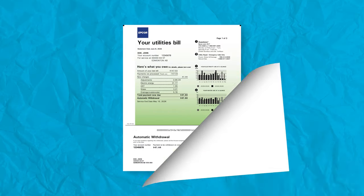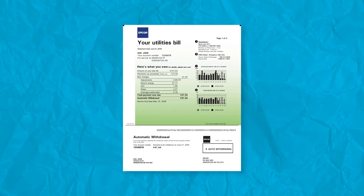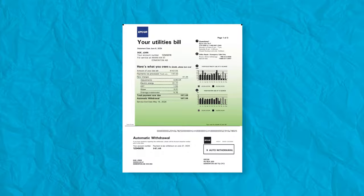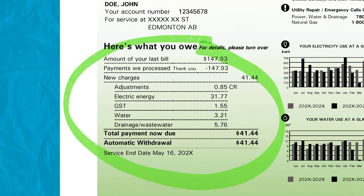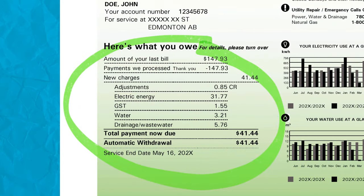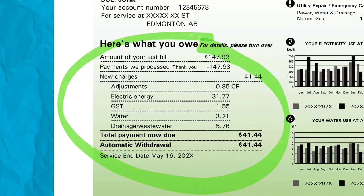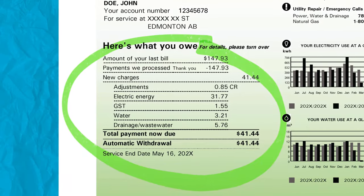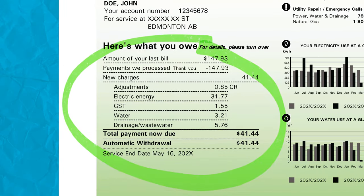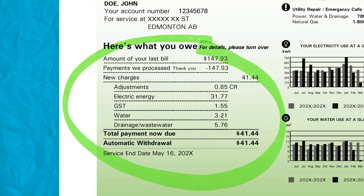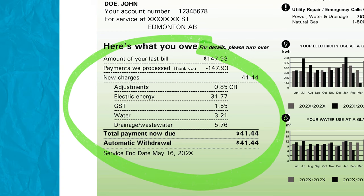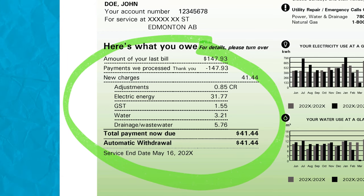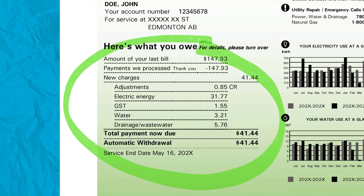On page 1 of your EPCOR bill, you'll find an overview of the amount owing for the services provided. This is a summary of your previous bill amount, any payments we received, and any new charges or adjustments for the current billing period. Billing periods vary for each customer and are a great place to look to determine rates and usage.